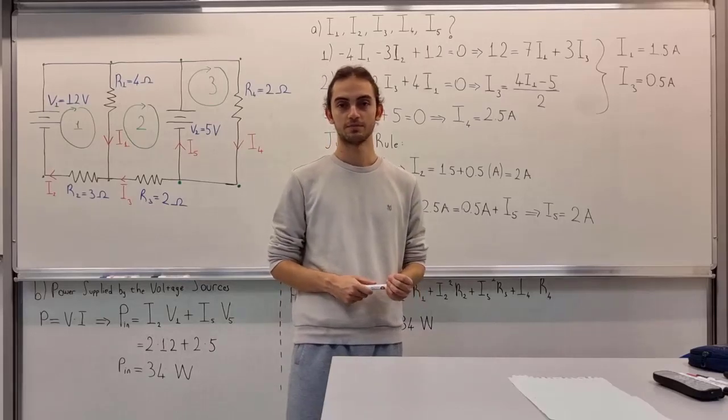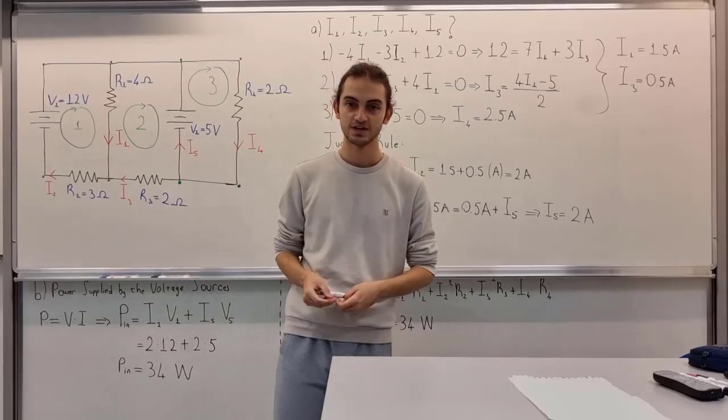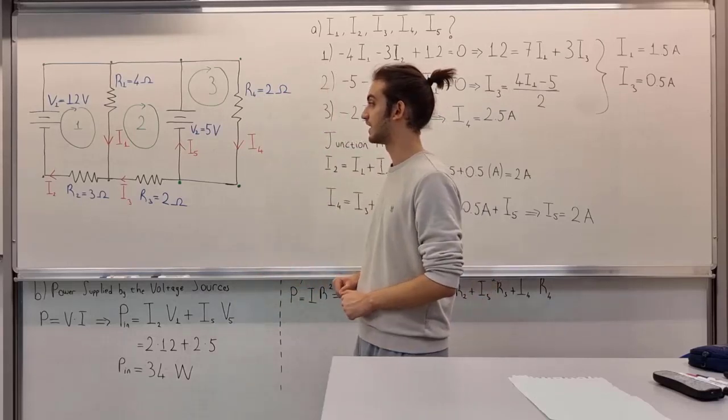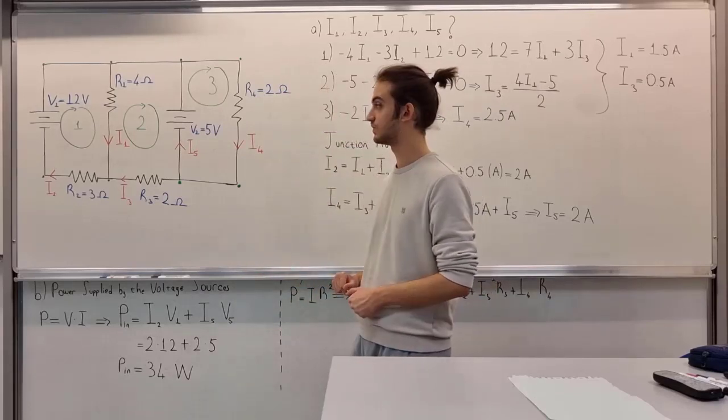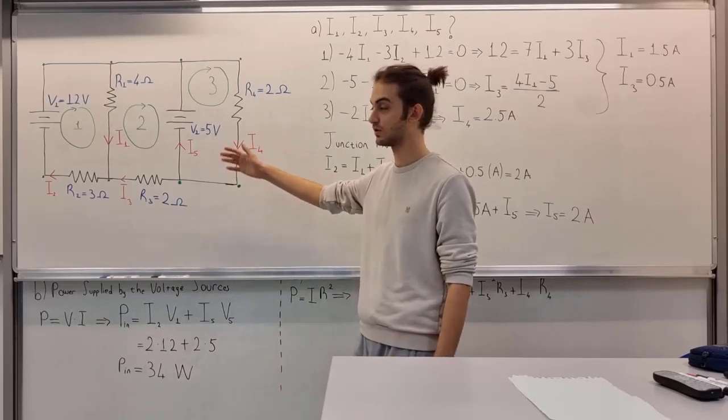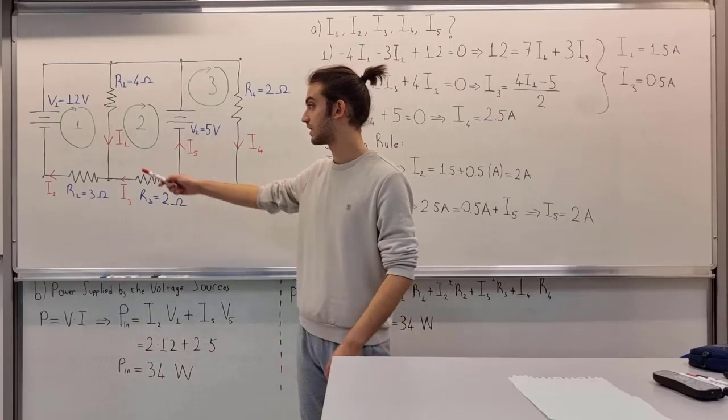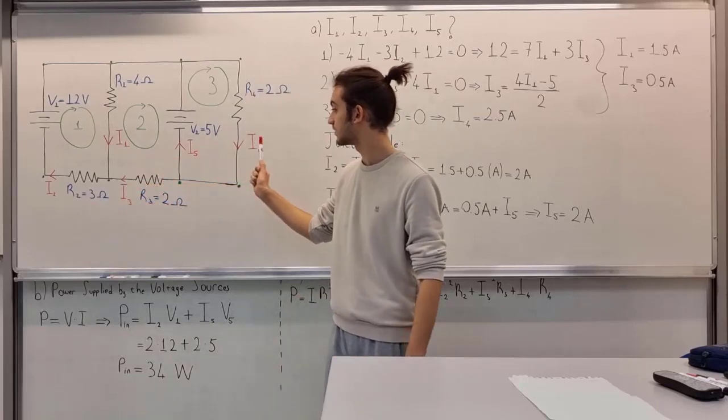Hello everyone, I'm back here with another question. In this question we are doing a circuit. In option A, we need to find the currents along the circuit that is depicted - I1, I2, I3, I4 and I5.